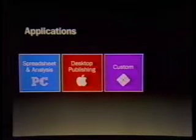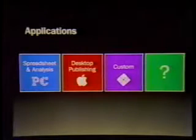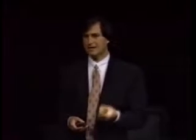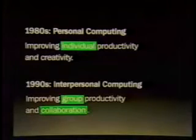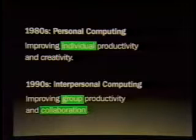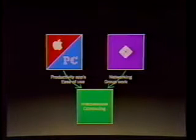We think in those first three categories we absolutely have achieved best of breed. But we also believe that there's a fourth area. What we're hearing from everyone is that the competitive advantage of the 90s is going to be squeezed not out of more individual productivity, but out of improving the productivity of teams and groups of people working together. That's where it's going to come from. And so we think that the most exciting thing of the early 90s is going to be to link these islands of personal computers together into interpersonal computing, which has as its mission to improve group productivity and collaboration.